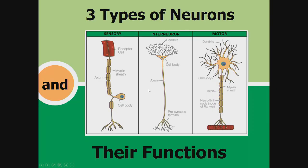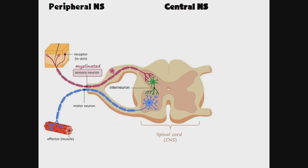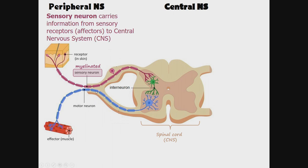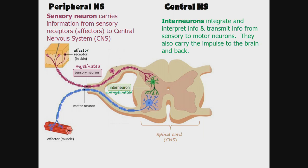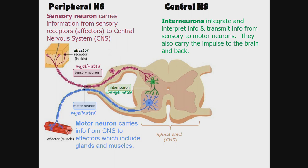There are three types of neurons: sensory, interneuron, and motor neuron. In the peripheral nervous system, sensory neurons are myelinated and carry information from sensory receptors or olfactors to the central nervous system. In the central nervous system, interneurons are unmyelinated; they integrate and interpret information, transmit information from sensory to motor neurons, and carry the impulse to the brain and back. Motor neurons are myelinated and carry information from the central nervous system to effectors, which include glands and muscles. Within the spinal cord, the outer part is myelinated and is called white matter, while the inner part is unmyelinated and is referred to as grey matter.